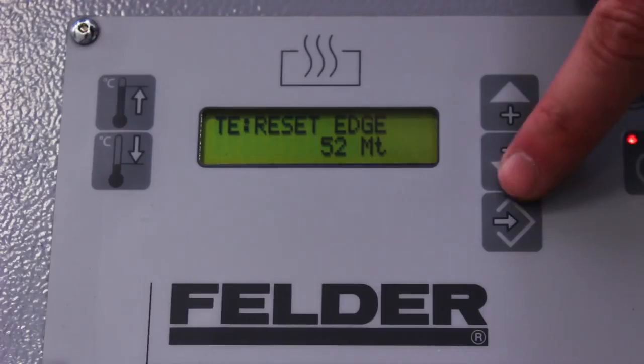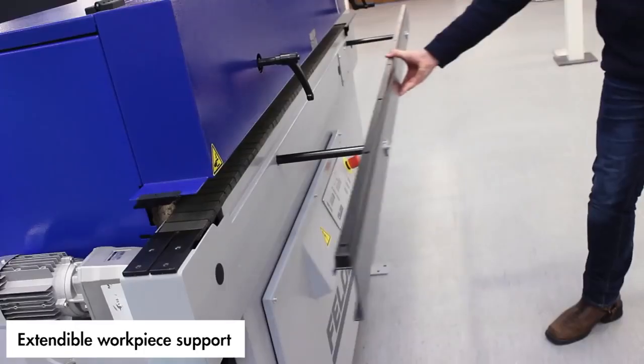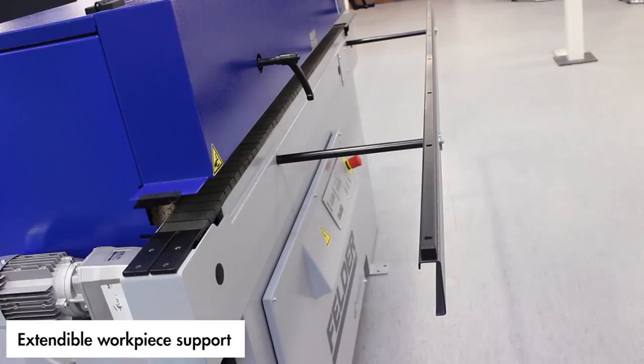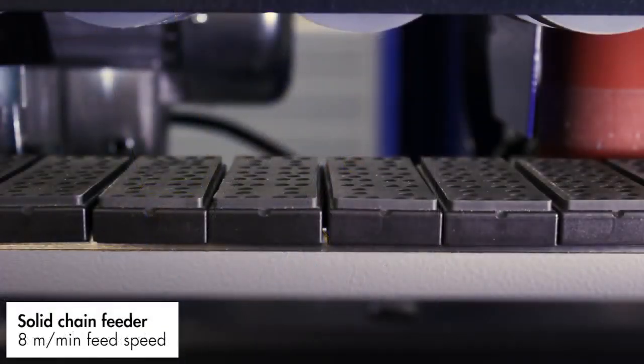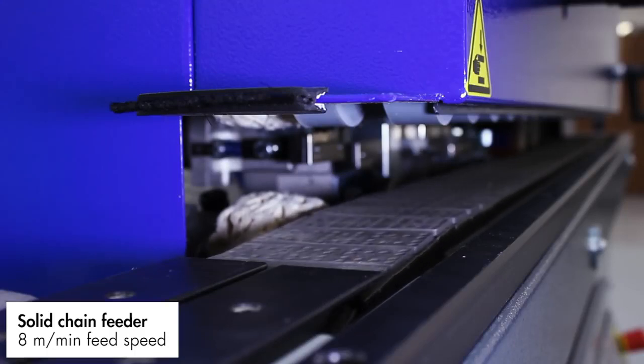An extendable workpiece support allows larger panels to be processed with ease, and the solid chain feeder ensures smooth transport of the workpiece with a feed speed of 8 meters per minute.